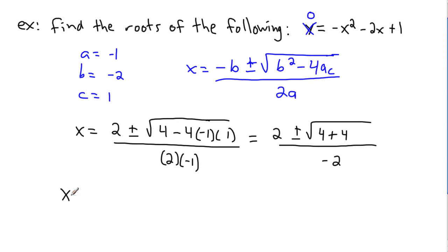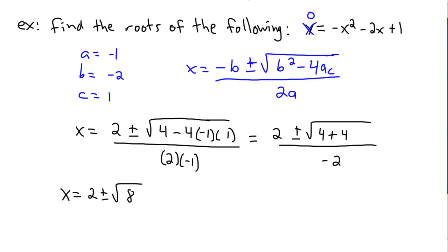Continuing: x equals 2 plus or minus the square root of 4 plus 4, which is 8, all divided by negative 2. Because the discriminant is positive — which we looked at before — that means I have two answers: x equals 2 plus √8 over negative 2, and x equals 2 minus √8 over negative 2.